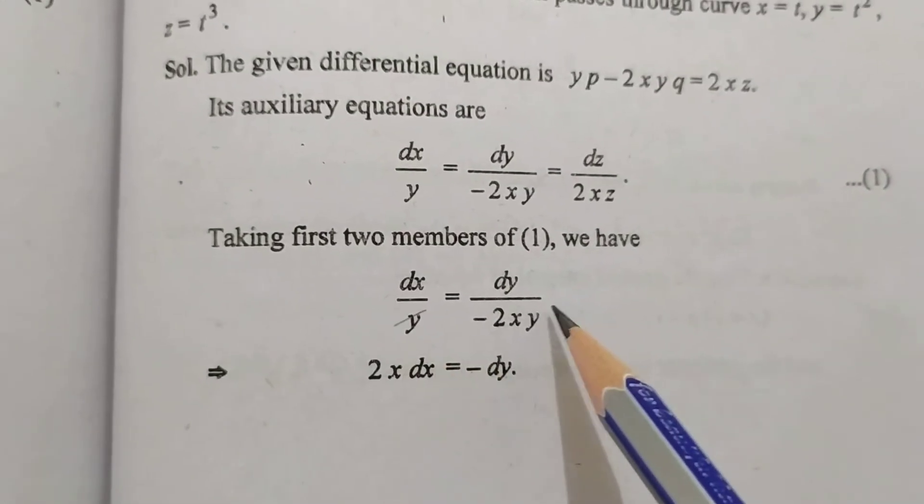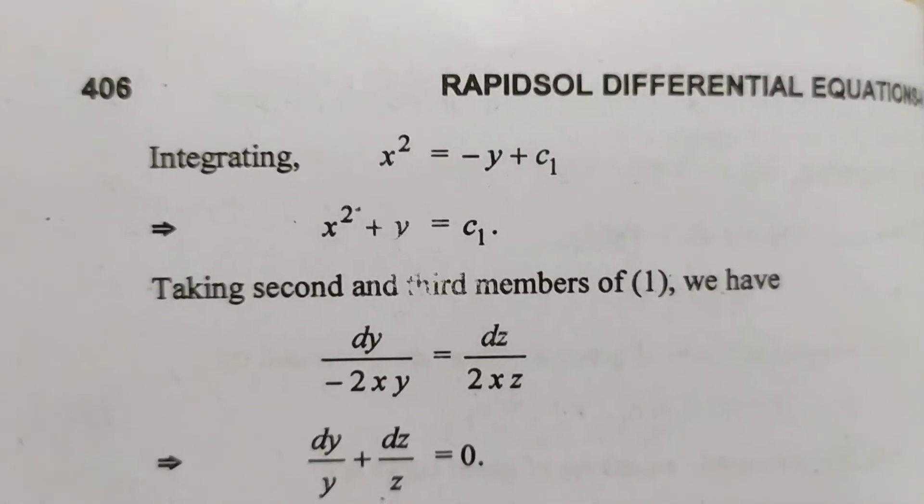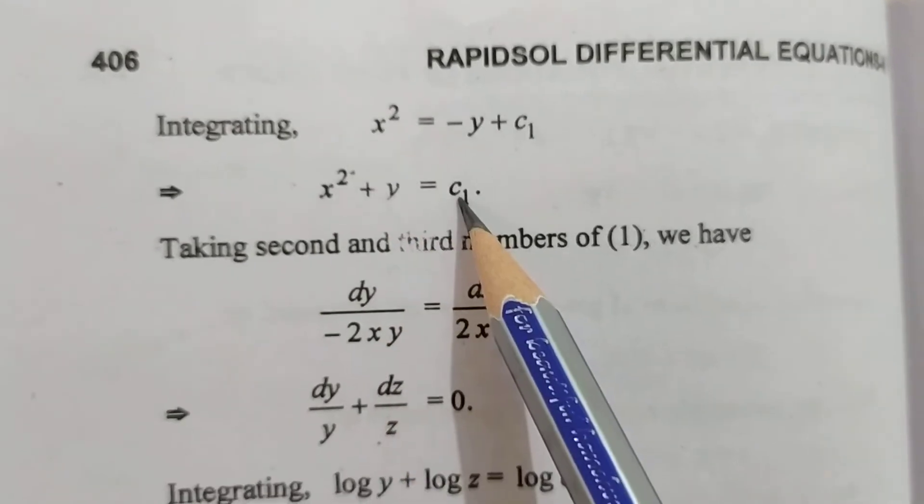Yahan pe y ke saath y cancel ho gaya. Integrating, x square is equal to minus y plus c1. x square plus y is equal to c1.